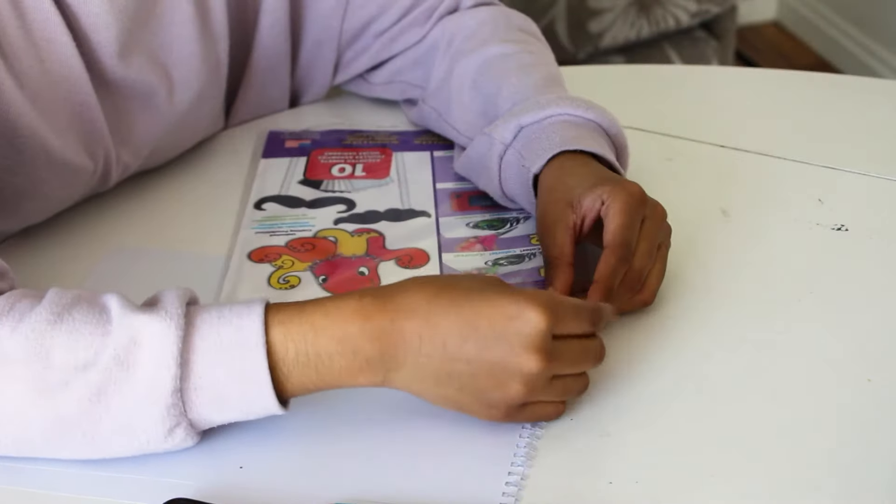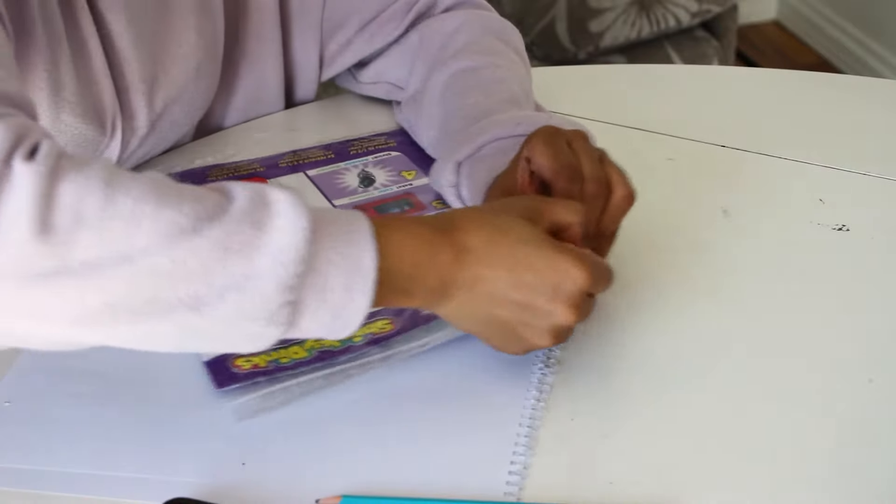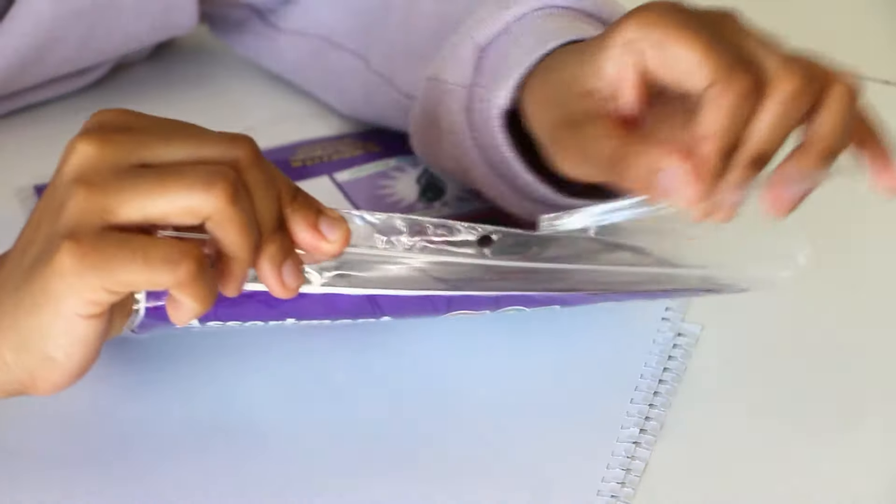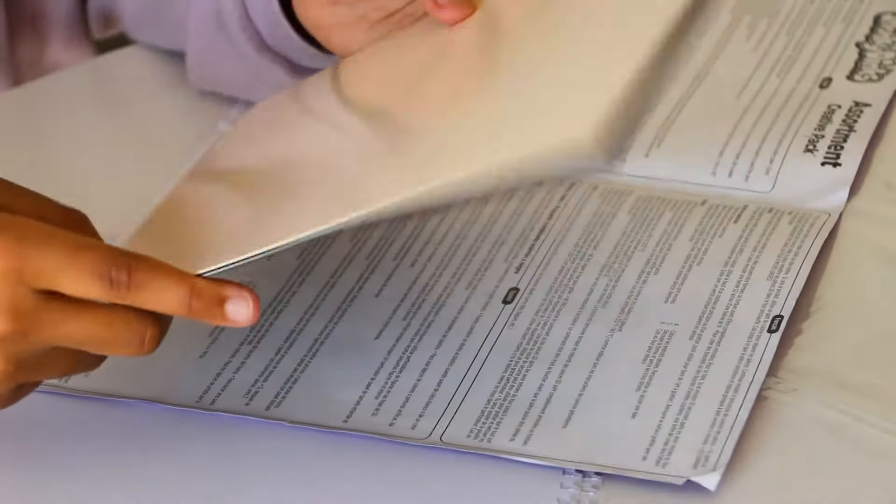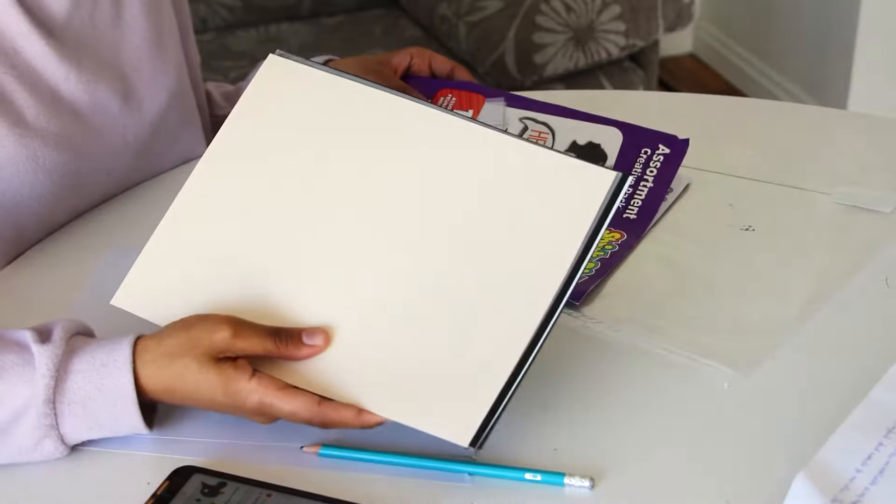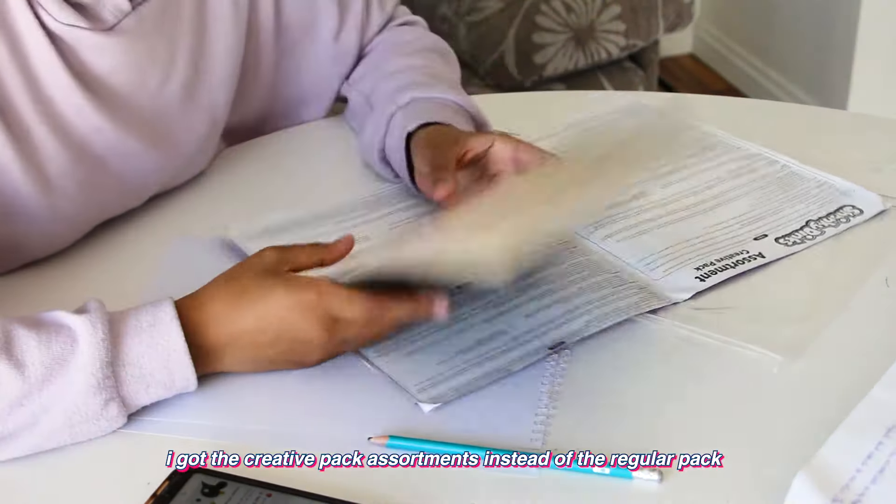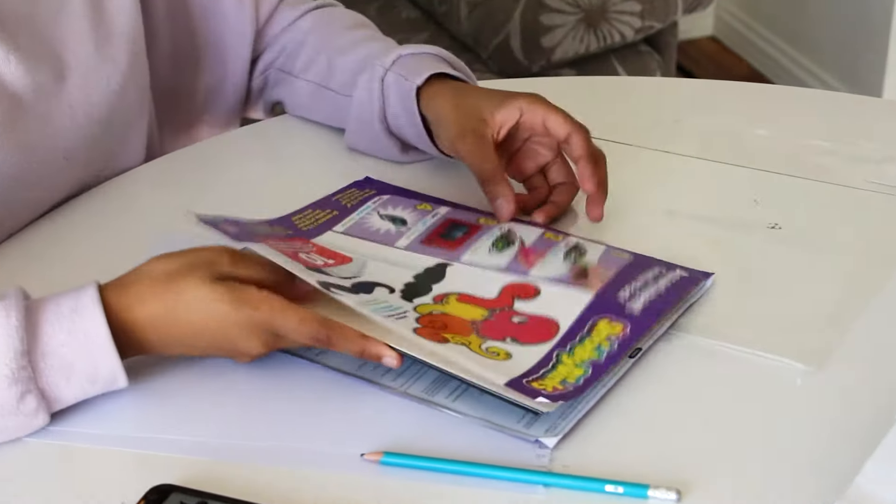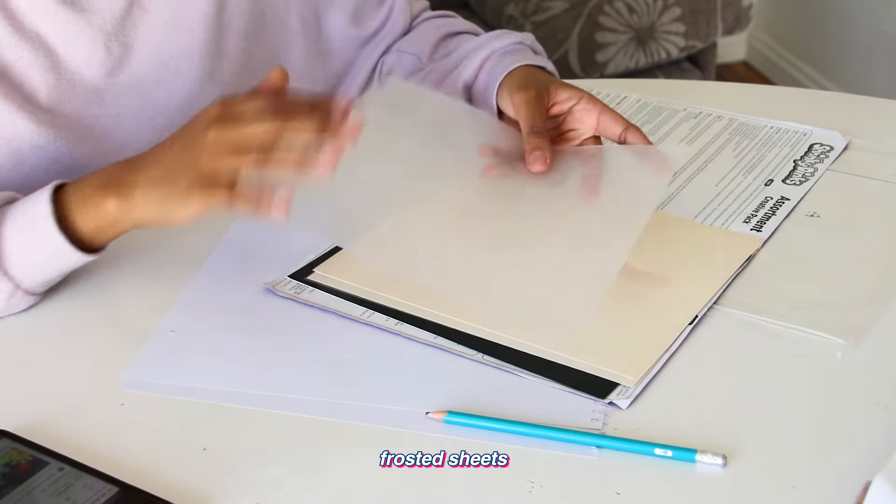First I'm going to open these shrink plastics. Okay, I don't know - it looks like this. I think I got the wrong one. I think the one that people use is the frosted one or maybe the white one, but this... oh my god, I think I got the wrong one. What do I do now? Okay, so for now I'm going to use the frosted sheets because I don't know what to do with the other ones.